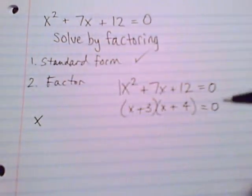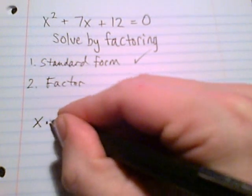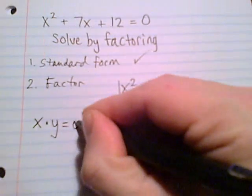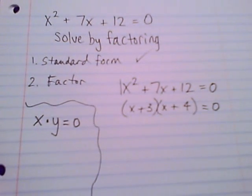And we'll choose positive three and positive four. Once it's factored, we are using this zero product rule, which is pretty neat and it's very useful for solving quadratic equations and doing lots of other stuff.